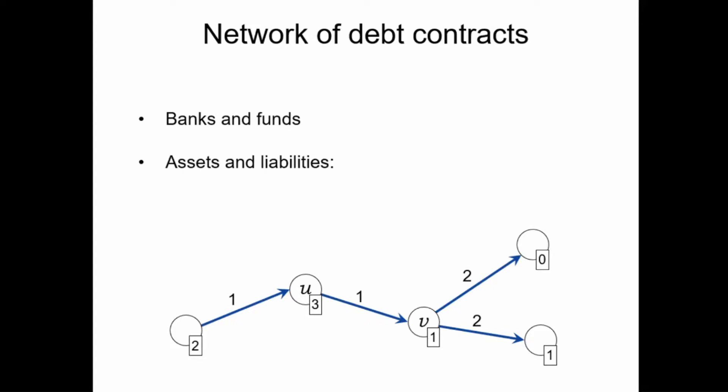For example, U receives one unit of payment on its incoming debt contract and has funds of three on its own, so altogether it has assets of four. It has a liability of one towards bank V. Since it has more than enough assets to fulfill these obligations, it will make a payment of one on this debt contract and keep the remaining three units of money to itself.